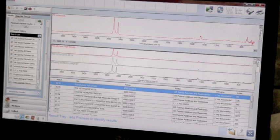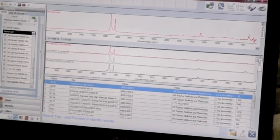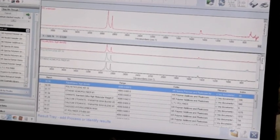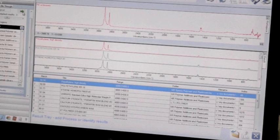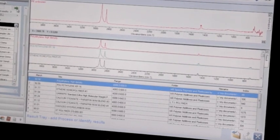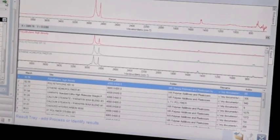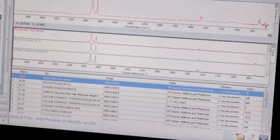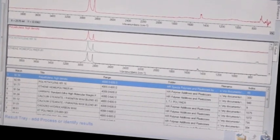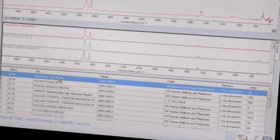Once we've run it through our library, the library has determined that the material is polyethylene. It comes up with the best match first and then decreasing percentage of matches down below, and the best match was polyethylene high density.